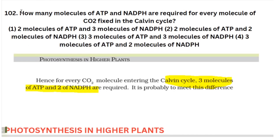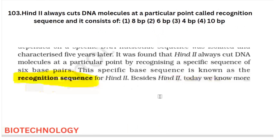The next question is: how many molecules of ATP and NADPH are required for every molecule of CO2 fixed in the Calvin cycle? This is from your photosynthesis in higher plants. It is also a direct question — they have concluded that for every CO2 molecule entering the Calvin cycle, three molecules of ATP and two of NADPH are required. So option four is the correct answer.